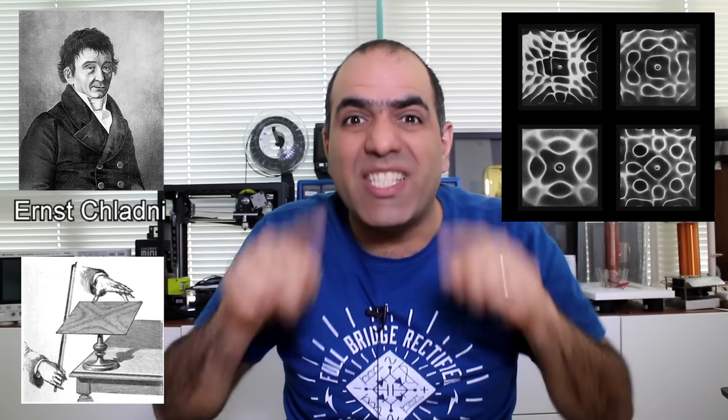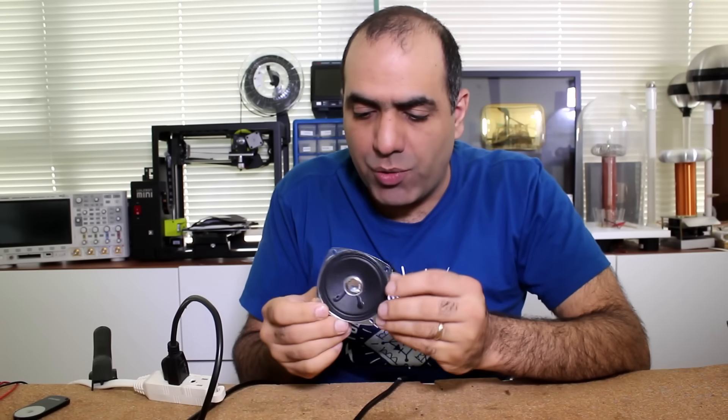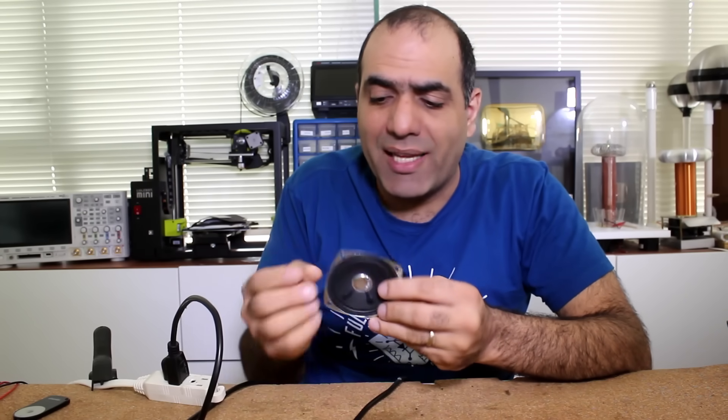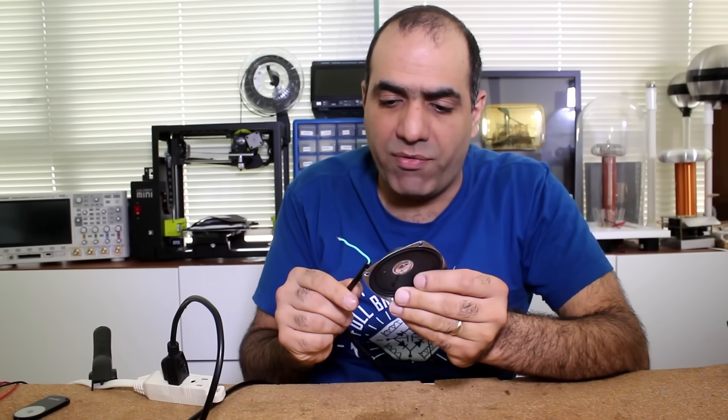The whole concept is based on Chladni's vibrating plate creating figures due to standing waves. I'd like to make my own plate using a speaker as an actuator. As you know, a speaker is a magnet and a coil — when you excite the coil with an AC voltage, it vibrates at the same frequency.